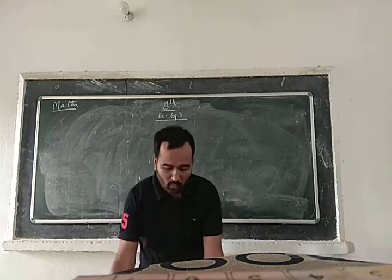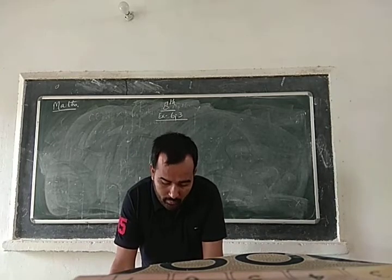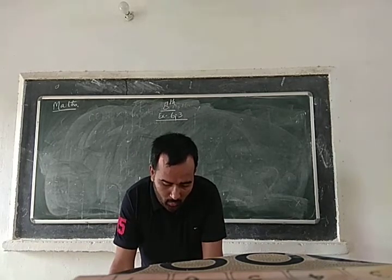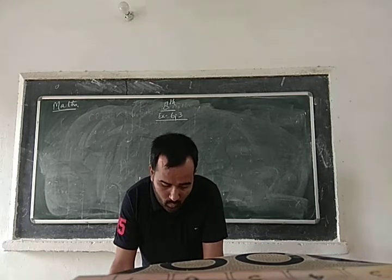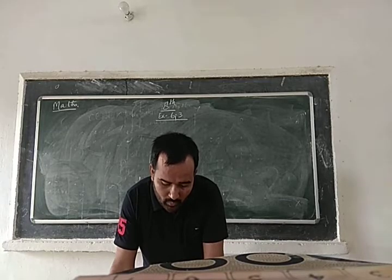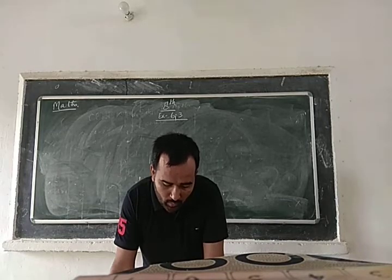Your question is: for each of the following numbers, find the smallest whole number by which it should be divided so as to get the perfect square, also find the square root of the square.